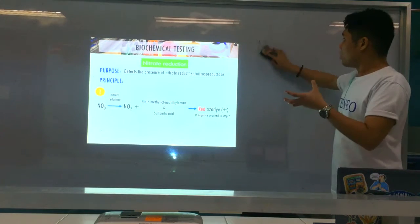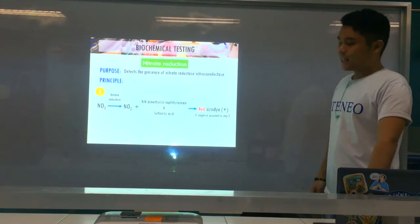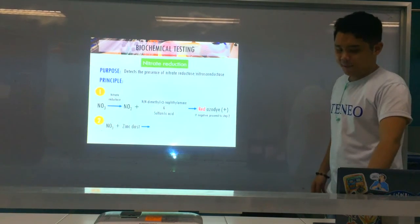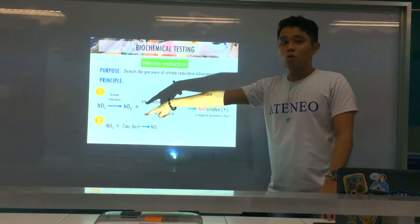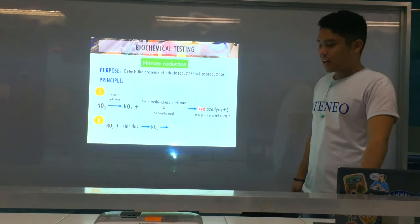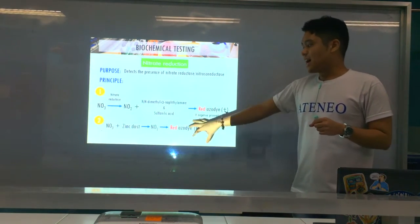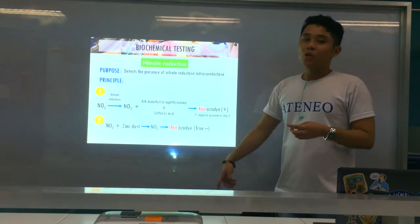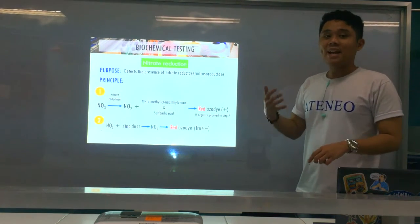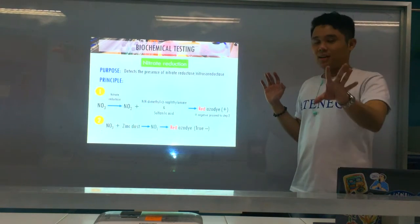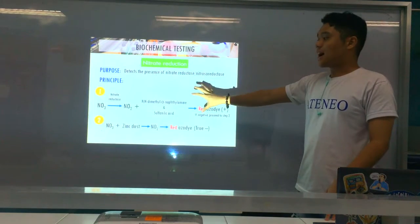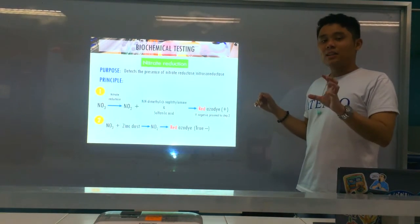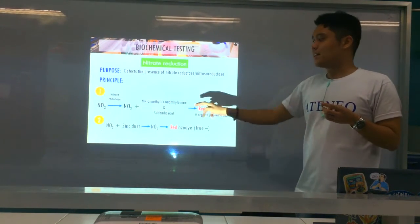If the result appears negative, we need to confirm it by adding zinc dust. Zinc dust converts nitrate to nitrite. If after adding zinc dust the solution turns red (azo dye), it's a true negative — because the zinc dust was the one that reduced the nitrate, not a bacterial enzyme. So in reaction one: if the organism has nitrate reductase, it converts nitrate to nitrite, producing a red azo dye — positive.